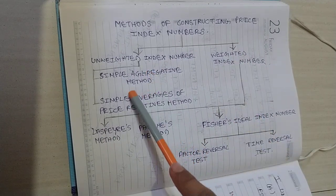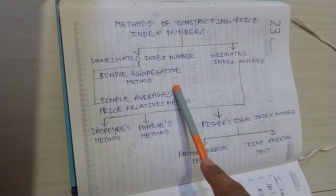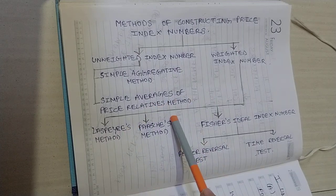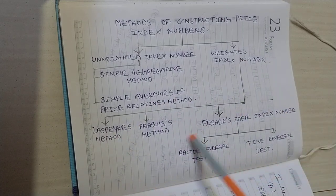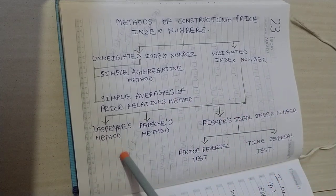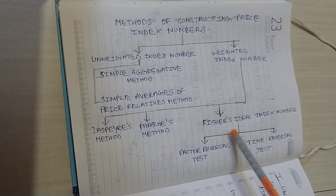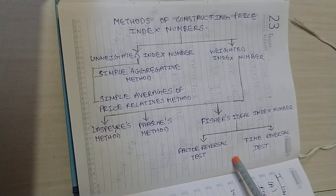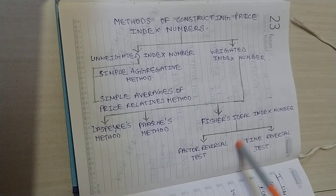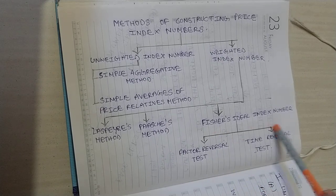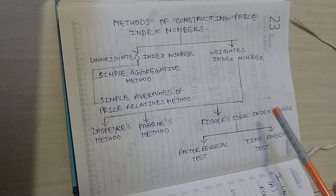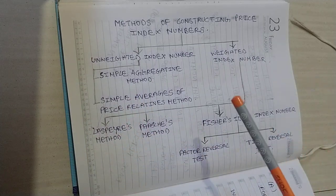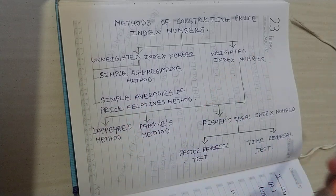Under unweighted, you have the simple aggregate method and simple averages of price relatives. Under weighted, you have three things: Laspeyres' method, Paasche's method, and Fisher's ideal index number. Under Fisher's ideal index number, you have the factor reversal test and time reversal test. We have to solve problems on all these methods.